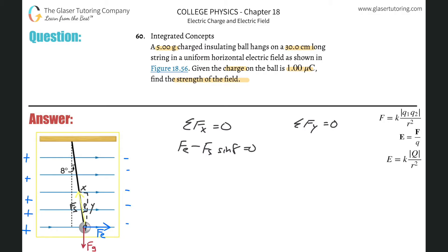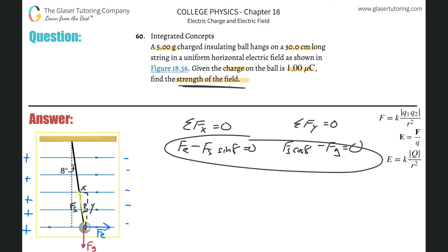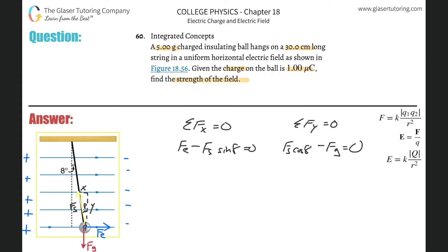Now transitioning to the y-direction: we have negative F_g (gravity downward) plus the positive y component from the string force, which is F_s times cosine of 8 degrees, minus F_g equals zero. We're asked to find the field strength, and neither equation yet has electric field strength E explicitly — it will come through the electric force.